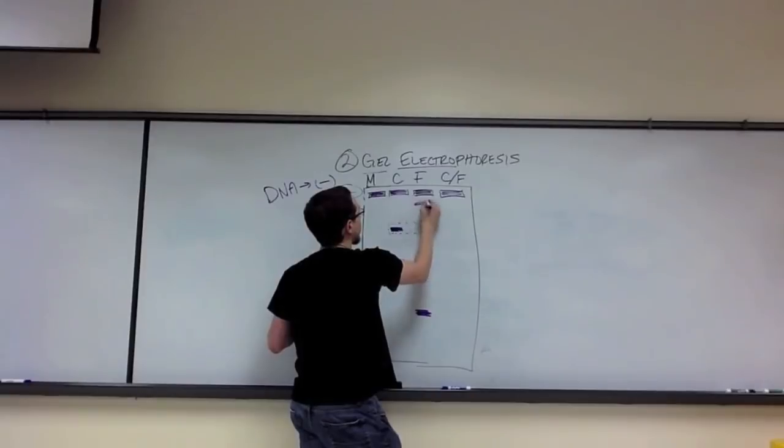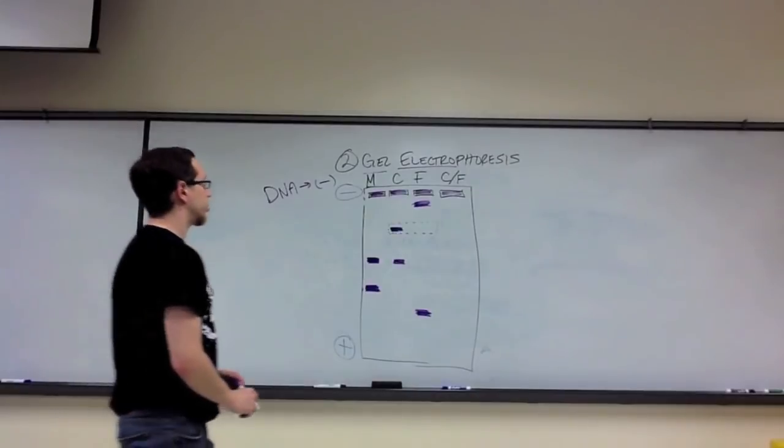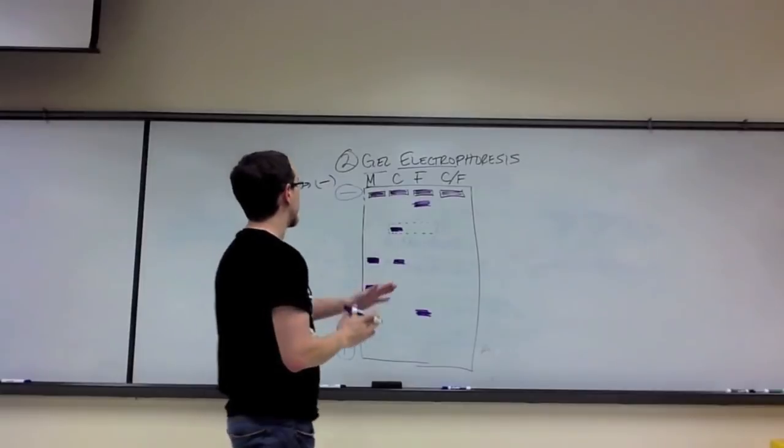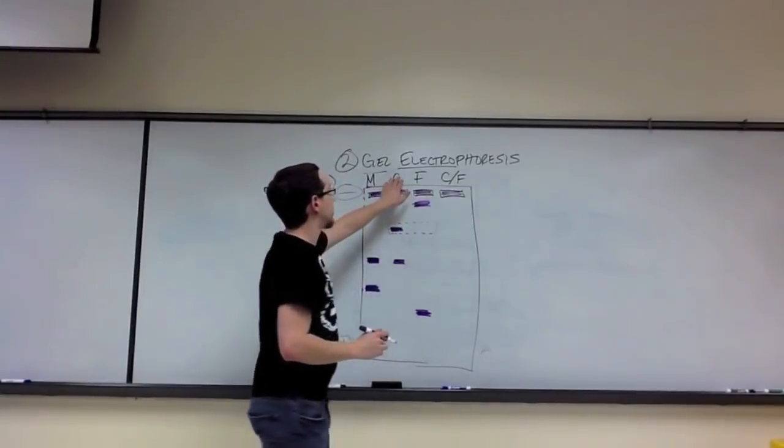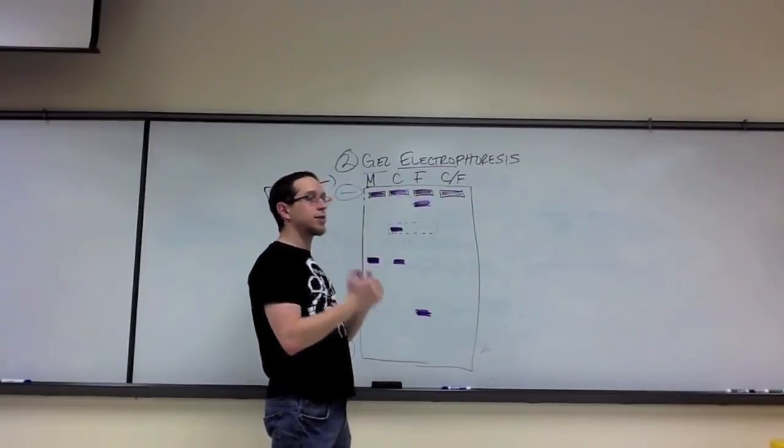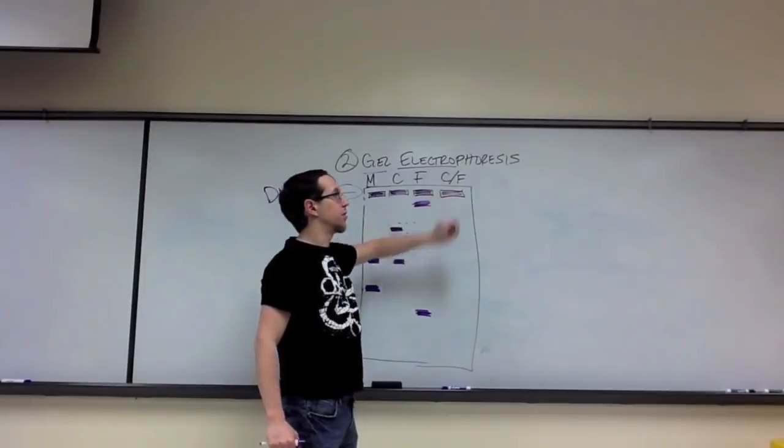Before I show you what it looks like when he is the father, let me talk about the child-father lane. The child-father lane represents a mixture of this sample and this sample. In other words, if I have a test tube of the child's DNA and a test tube of the father's DNA, I mix those two test tubes together to give me the child-father mixture.